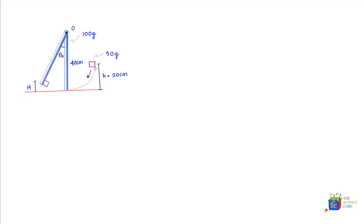Step one: we consider the potential energy of the block and how it converts into kinetic energy. We can say that mgh, the potential energy of the block, equals half mv², the kinetic energy when it just about hits the rod. From this, the velocity of the block equals √(2gh).